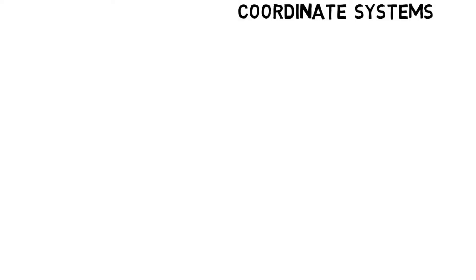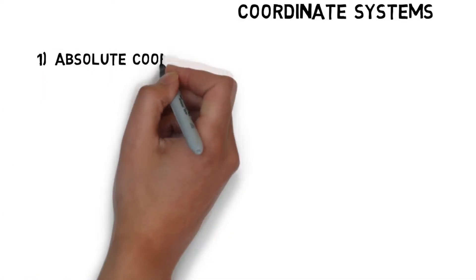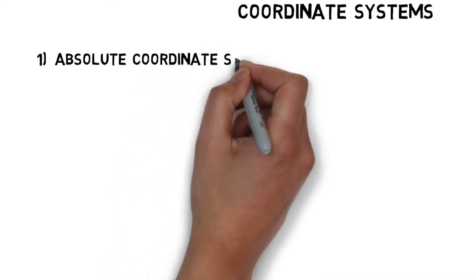Based on this concept, in CNC we use two kinds of coordinate calculation methods: absolute coordinate system and incremental coordinate system.